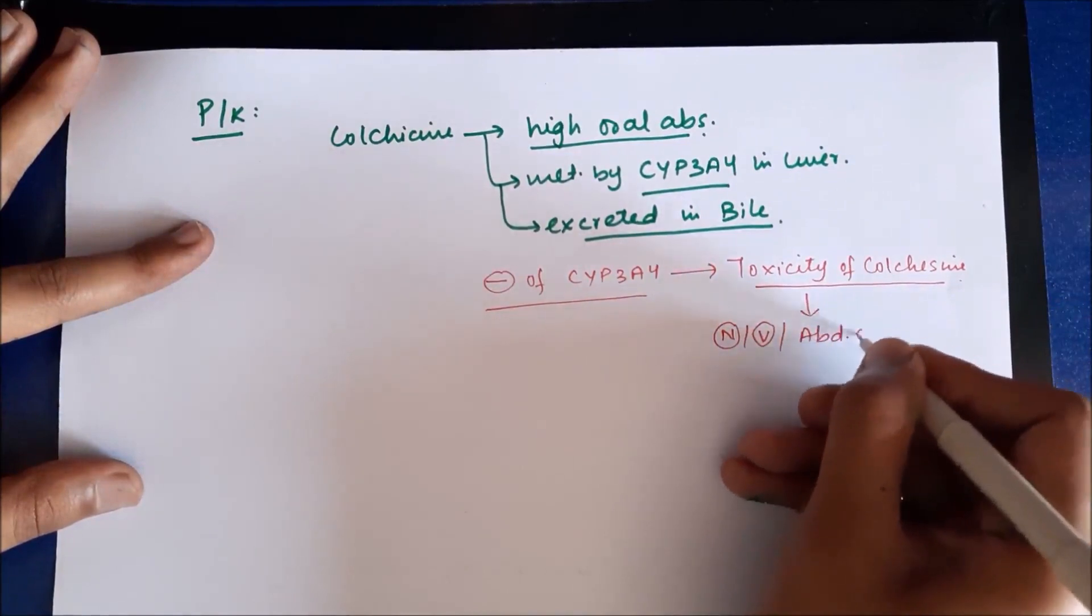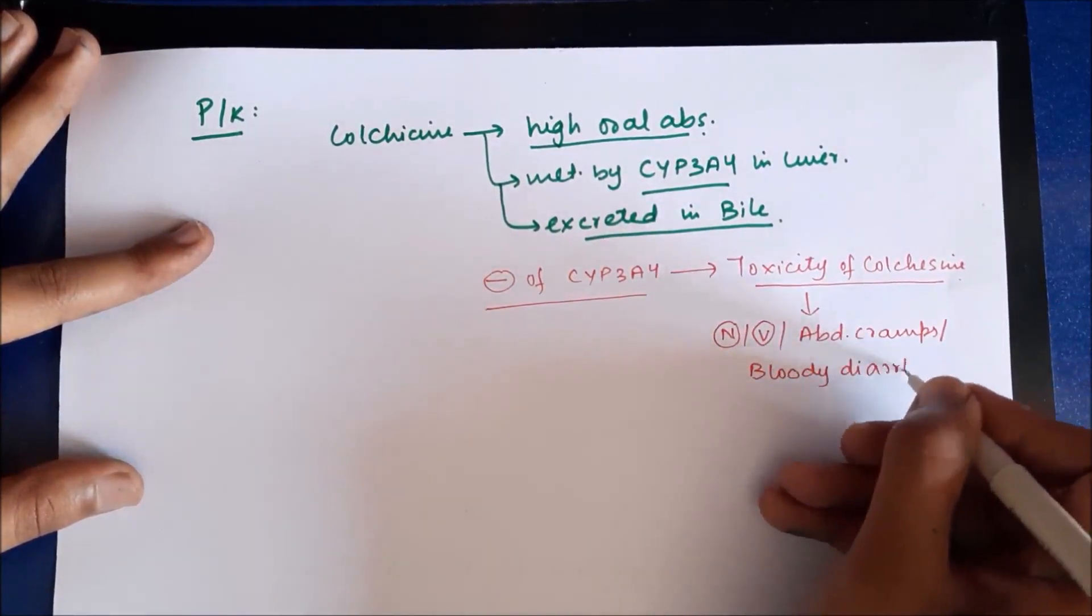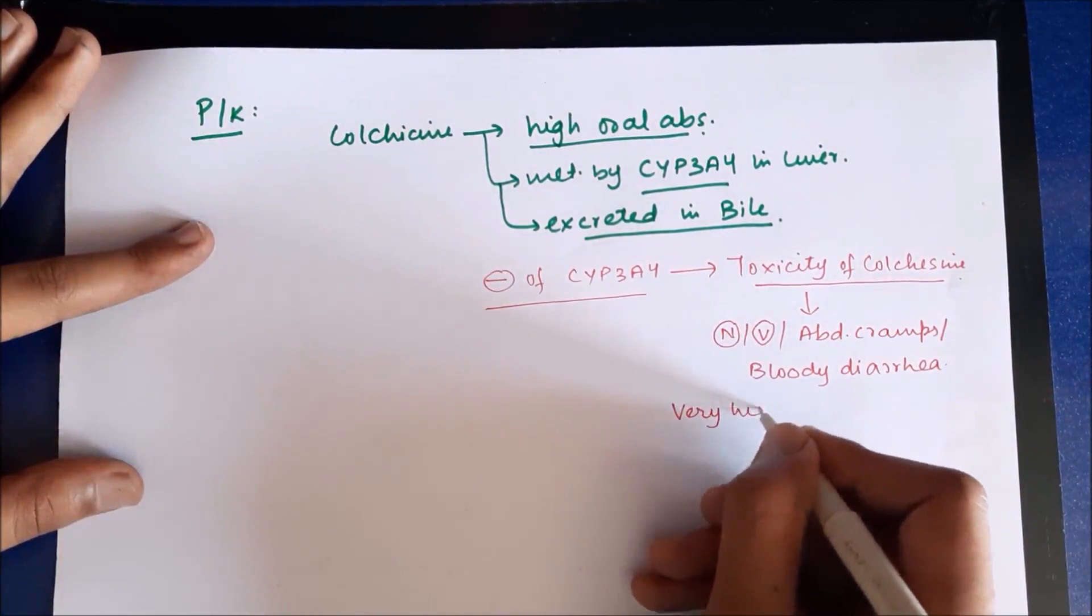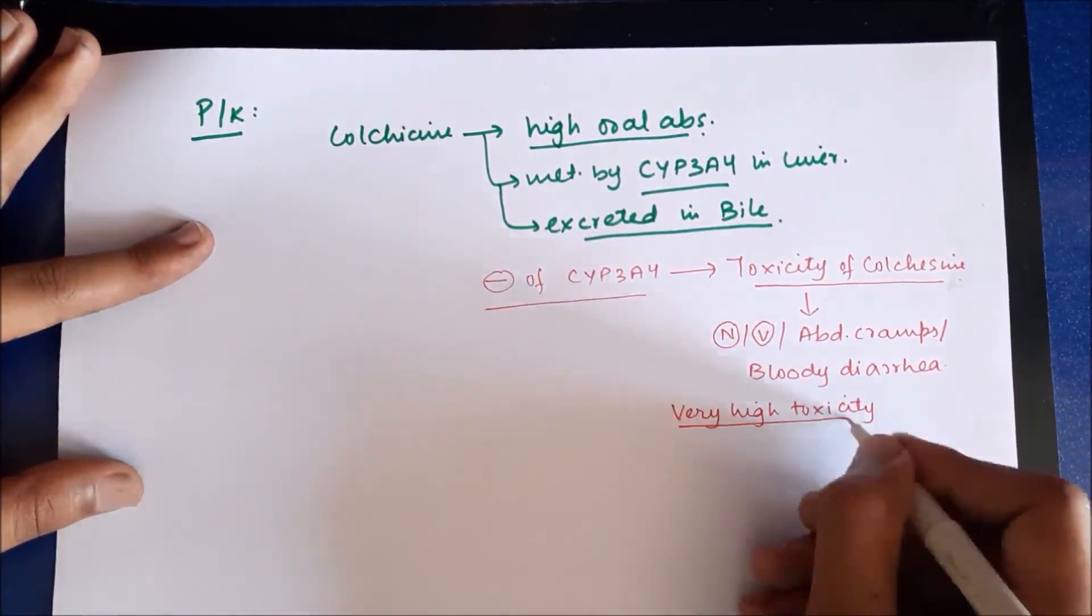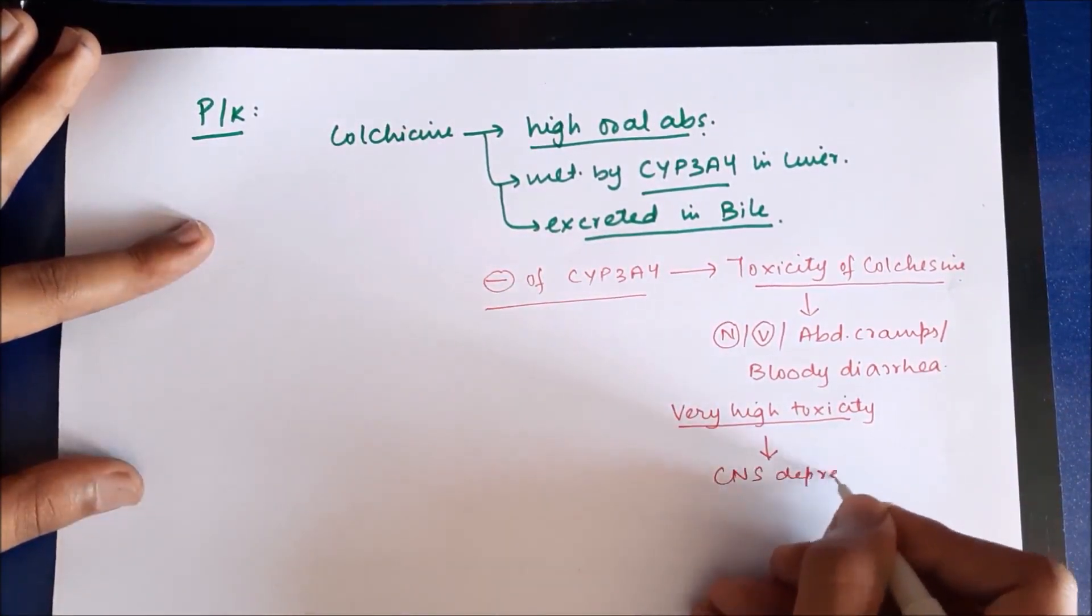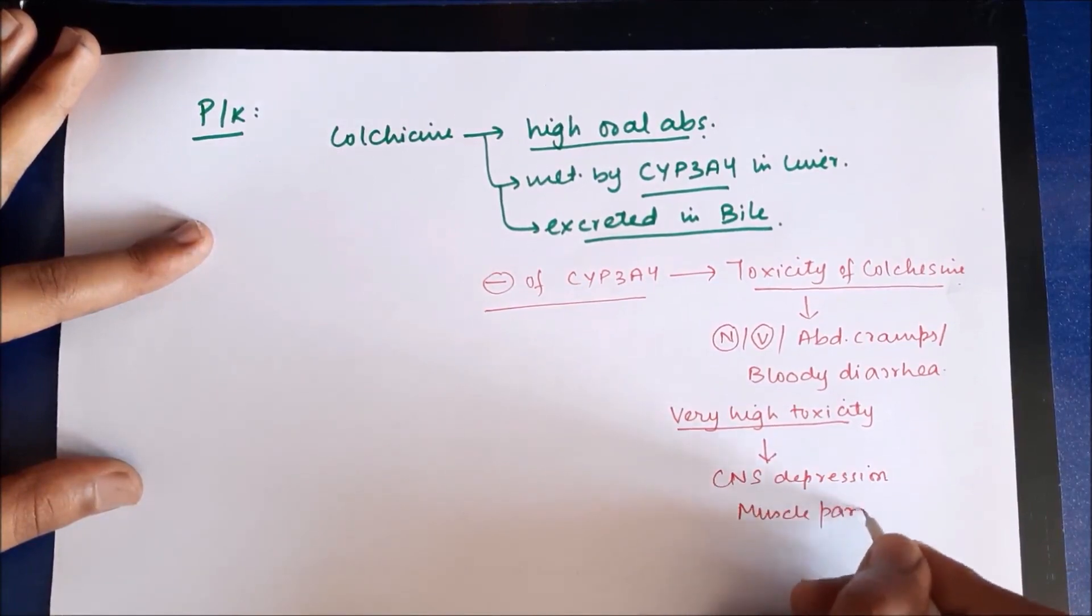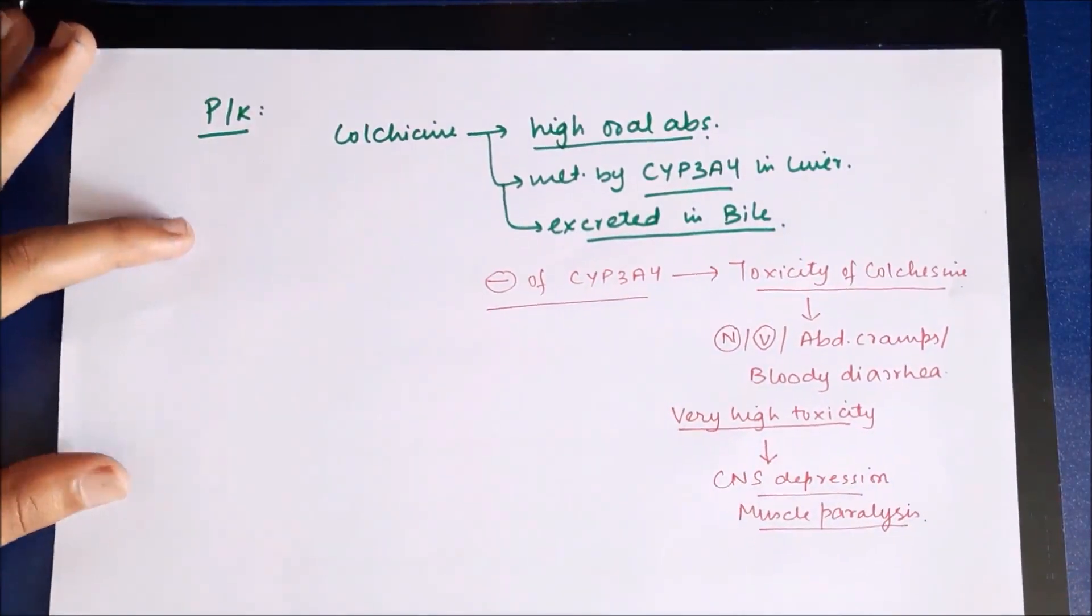And in case of toxicity of colchicine, symptoms such as nausea, vomiting, abdominal cramps, and bloody diarrhea are very common. Now if there is a very severe toxicity of colchicine, then that results in CNS depression and muscle paralysis and paralysis of respiratory muscle.